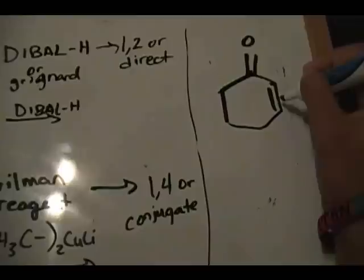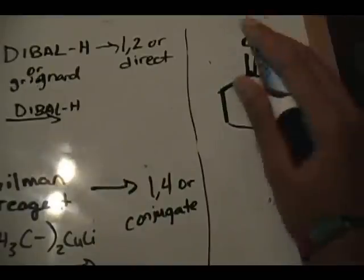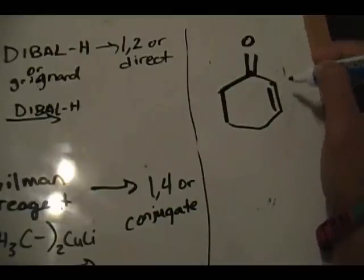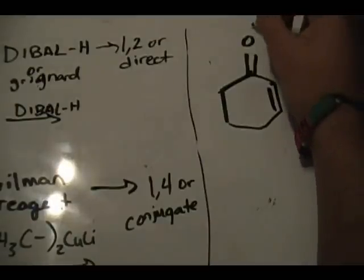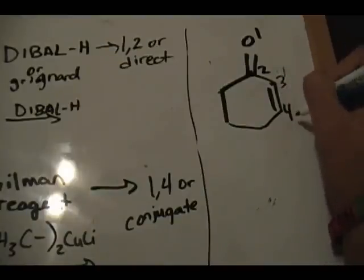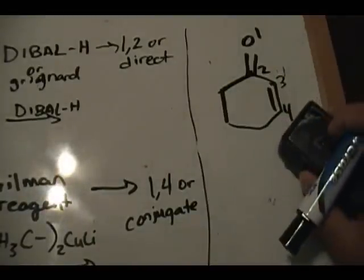Is it a conjugated system? Absolutely. Here's our C=C double bond, then a C-C single bond, then a C=O double bond — perfect, it's a conjugated system. Once you identify your system, you want to number it. Starting with oxygen as position 1, then the carbon of the carbonyl is 2, then the alkene itself is 3 and 4. So you end up with the alkene as your number 4 — that's really important.